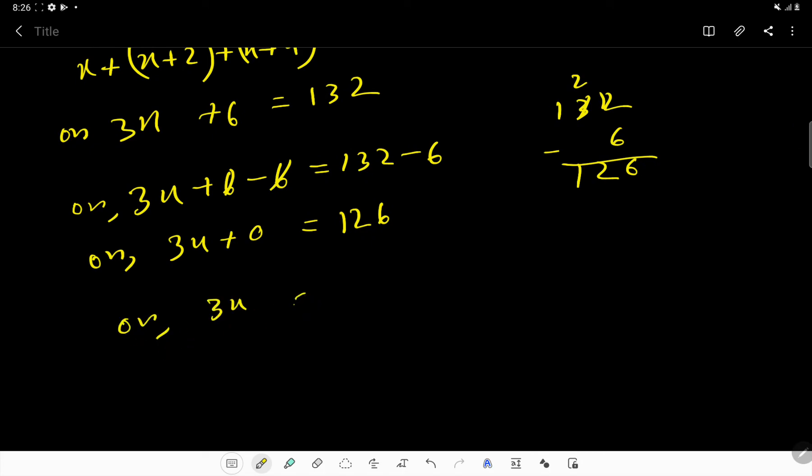So 3x equals 126. Divide both sides by 3. So 3x divided by 3 and 126 divided by 3.